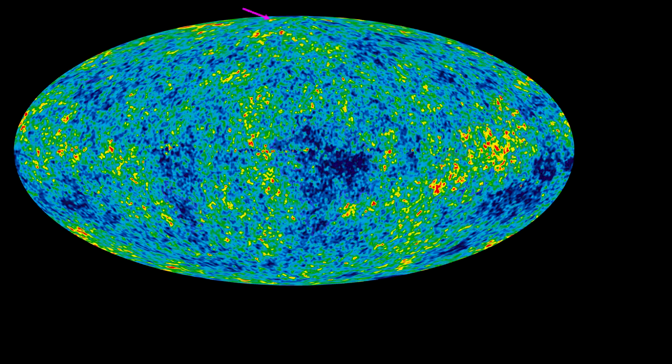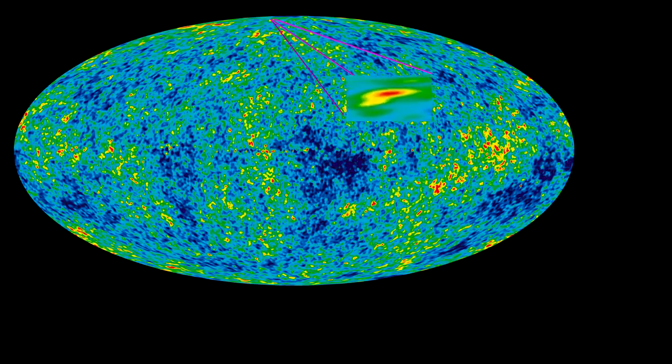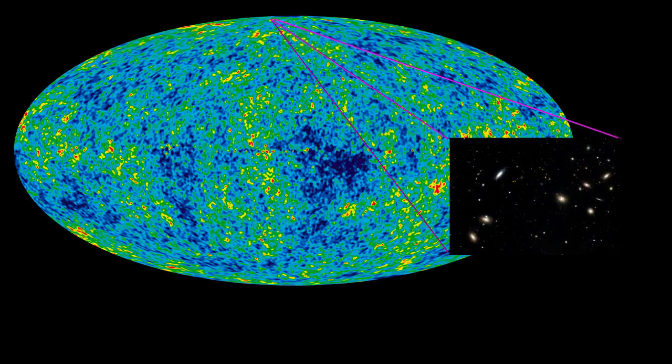For example, a very tiny spot of red on the surface of last scattering, representing a small decrease in mass density in that region, will have expanded 1,100 times to the size of the Coma cluster today.